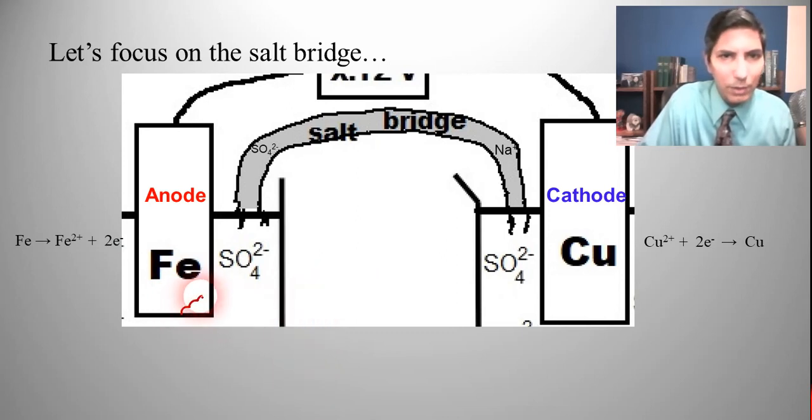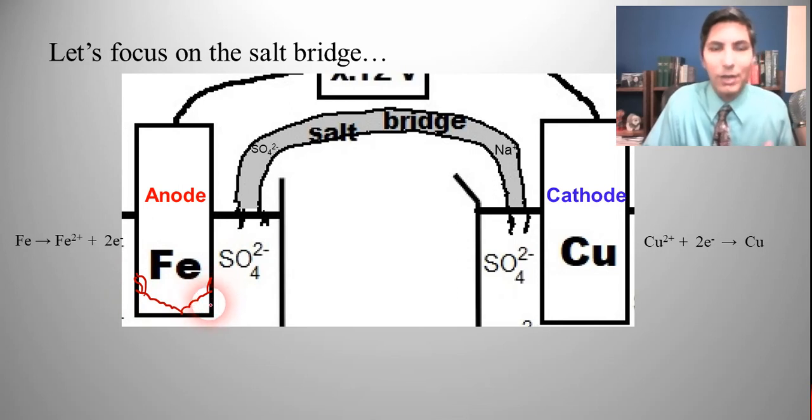And so that means that the iron anode over here is slowly being corroded away. And so if you were to look at this after a while, you might see it's starting to dissolve away, maybe it's being corroded. And so it's going to lose mass. That's what happens to the anode. Over time, it loses mass.